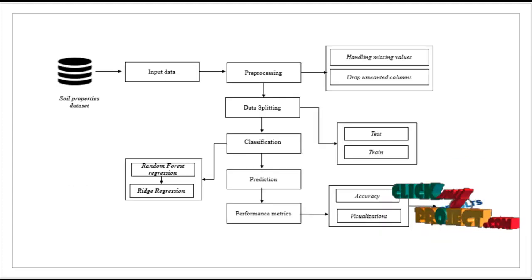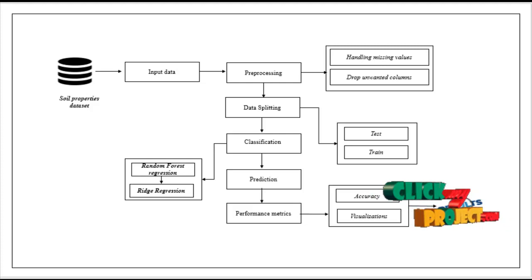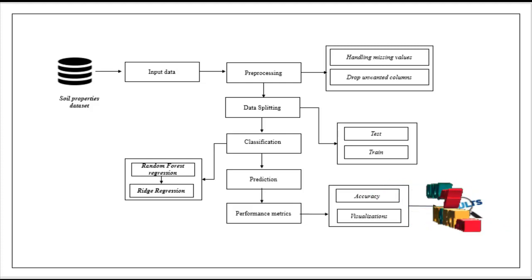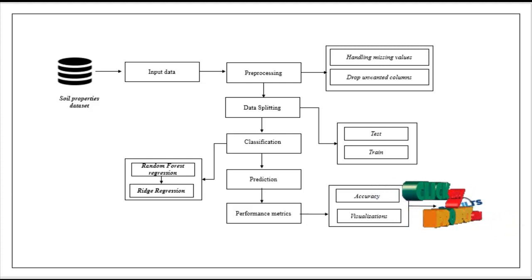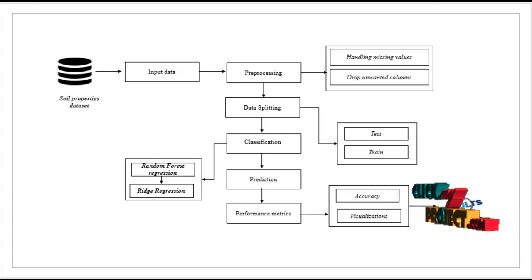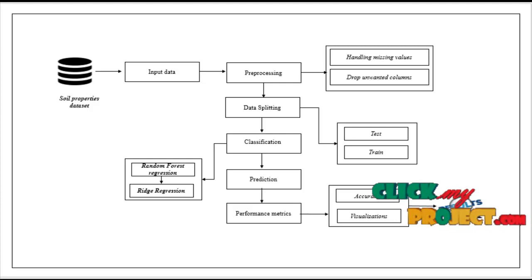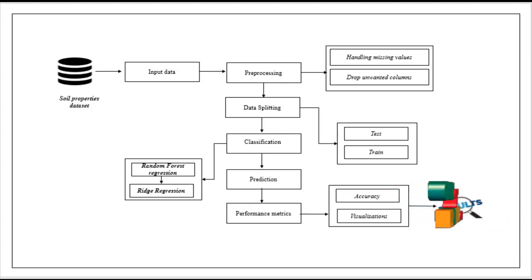Now we are going to see about the flow of our process. This is the flow diagram. First we have to take the dataset. The dataset name is soil properties dataset. The dataset was collected from dataset repositories like UCI, GitHub, Kaggle, and so on.